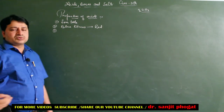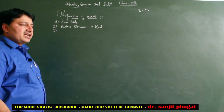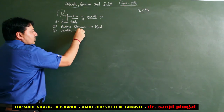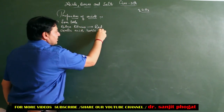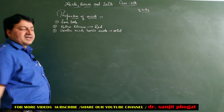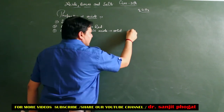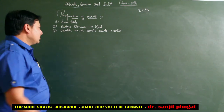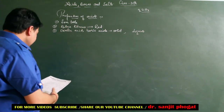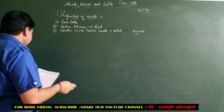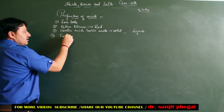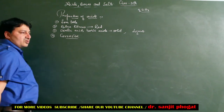अगली Property - कुछ Acids Solid Form में पाए जाते हैं और बहुत सारे Liquid Form में। जैसे Oxalic Acid और Boric Acid Solid Form में मिलेंगे। इसके अलावा HCl और HNO3 Liquid Form में हैं। इसके अलावा जितने भी Acids हैं वो ज़्यादातर Corrosive Nature के होते हैं - They are corrosive in nature।